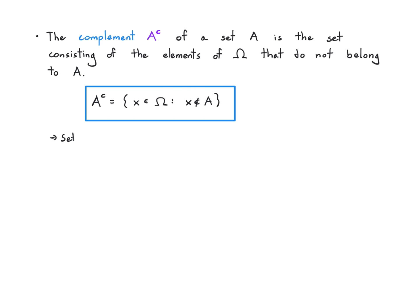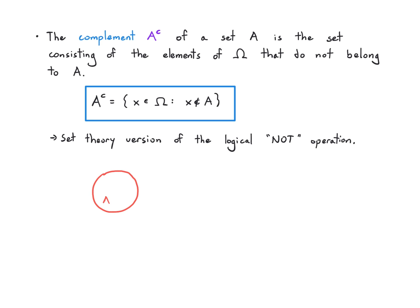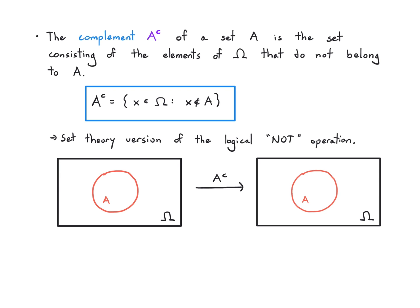This is the set theory version of a logical NOT operation. Visually, to think about the complement of A, I need to consider the universal set — the rectangle — to know that all elements not in A are the elements in the rectangle that fall outside of A. I need to see the outside of A, the entire universe as well, before I can write the complement.